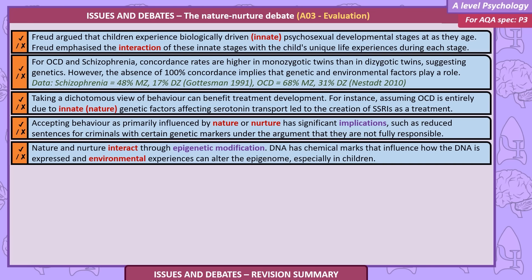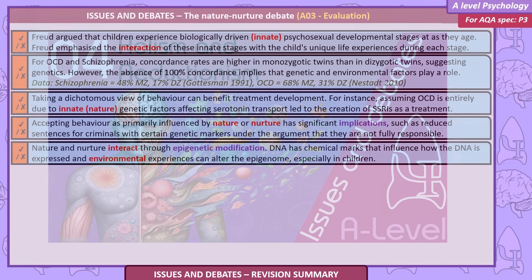Accepting that behaviours are primarily influenced by nature or nurture has significant implications — such as reduced sentences for criminals with certain genetic markers, under the argument that they are not fully responsible. Nature and nurture also interact through epigenetic modification: DNA has chemical marks that influence how it is expressed, and environmental experiences can alter the epigenome, especially in children.